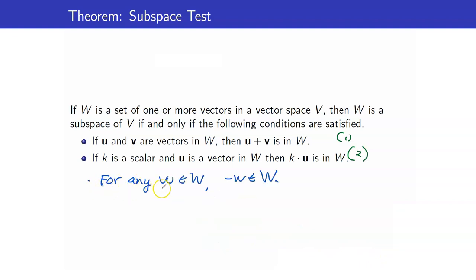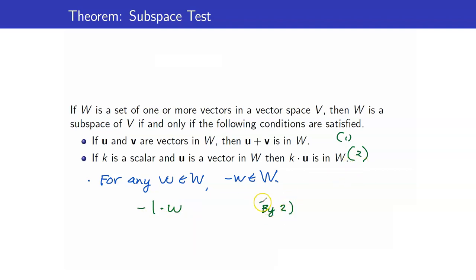Next, I will show that for any vector in W, its additive inverse is also in W. I will again use closure under scalar multiplication. I take vector W and multiply it by negative 1. By closure under scalar multiplication, this scalar multiple of W is again inside W. Recalling from previous discussions that negative 1 times W equals negative W, hence we have shown that the two other conditions will be satisfied.